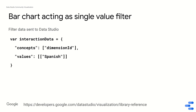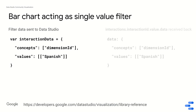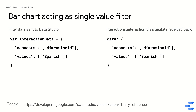For example, if you have a bar chart acting as a single value filter, so I'm saying dimension ID and I'm going to send the value Spanish. This is the data you send to Data Studio saying I want to filter on dimension ID equals Spanish. Data Studio is going to send back an acknowledgement saying I've applied this filter on dimension ID equals Spanish.